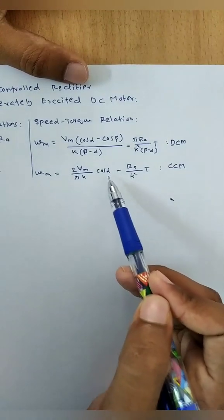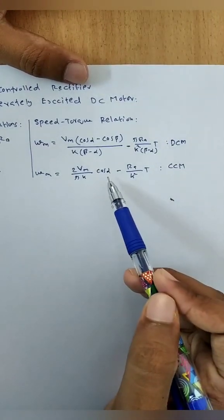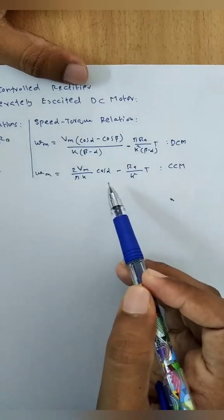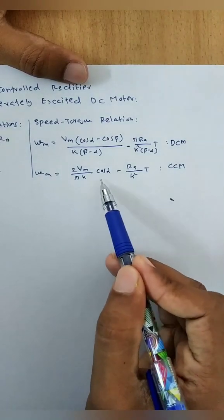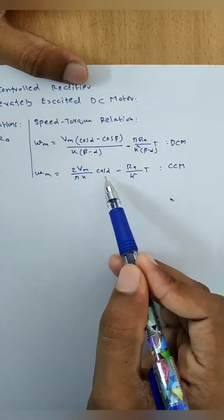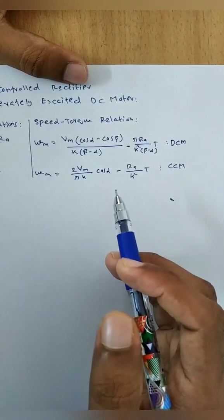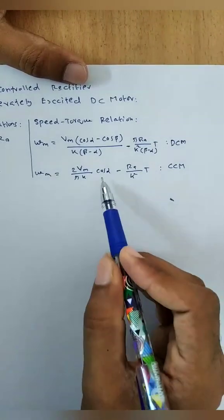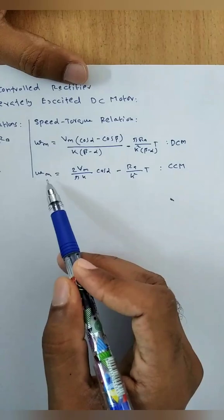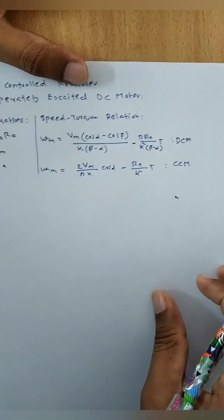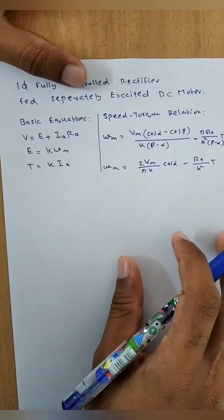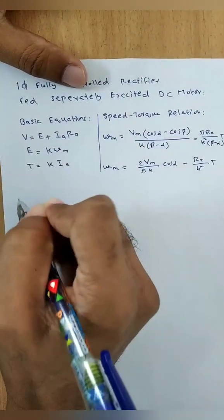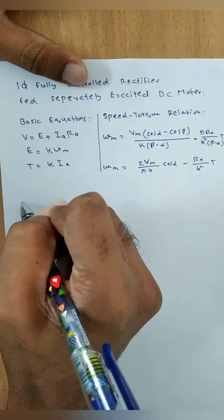We can vary and control the speed of the motor by controlling the firing angle. The firing angle can be controlled in the range of 0 to π. When alpha is between 0 and π/2, cos α is positive, and when alpha is between π/2 and π, cos α is negative. So the polarity of ω_M depends upon the firing angle alpha.